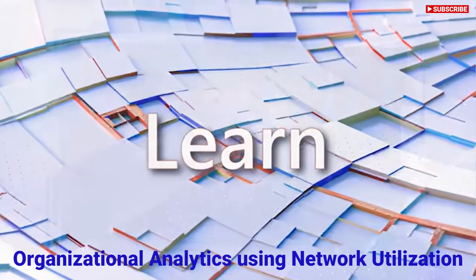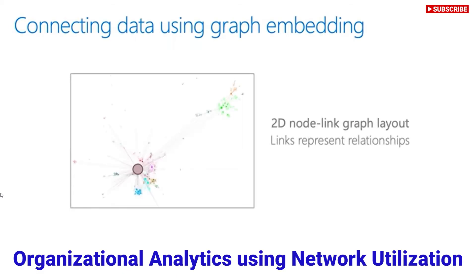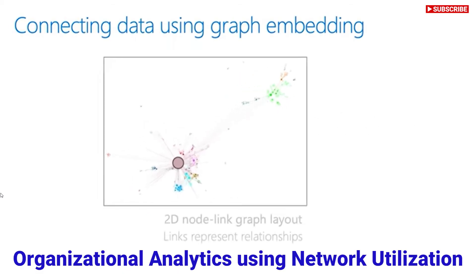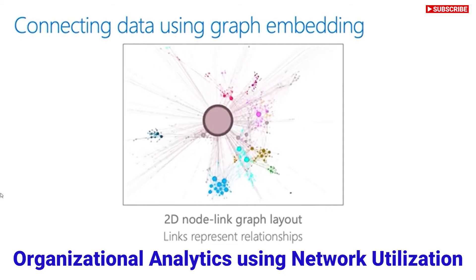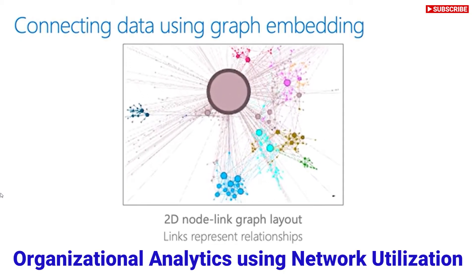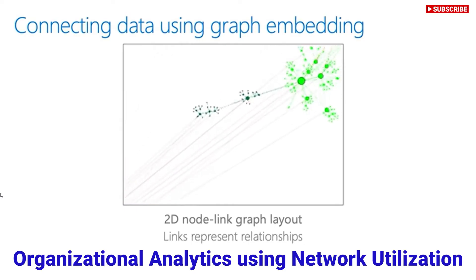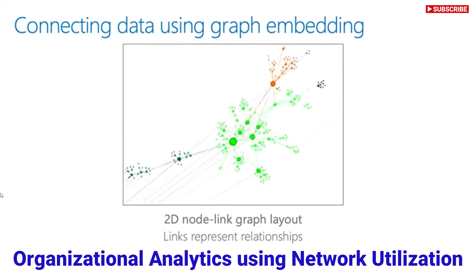Now that we've seen how we can build network layouts and understand the collaboration patterns around a particular network, let's move to one of the next most common tasks when looking at graphs: ranking. Let's say you have a graph and you have the challenge of trying to find another person who has a similar communication pattern to a given person.